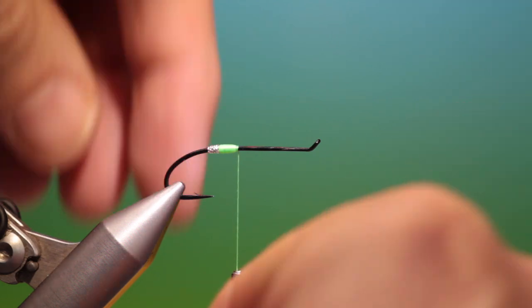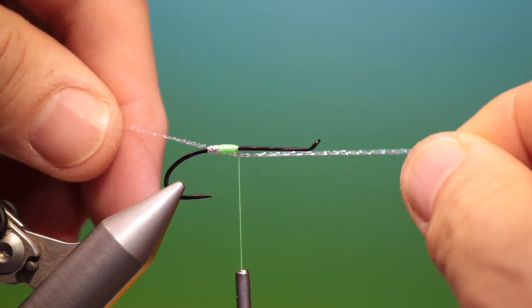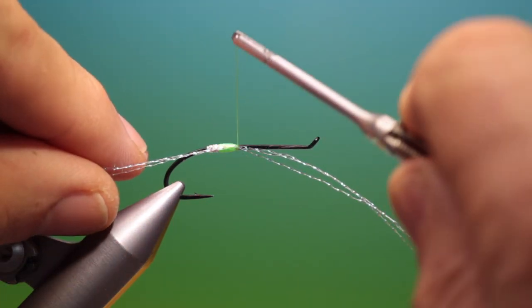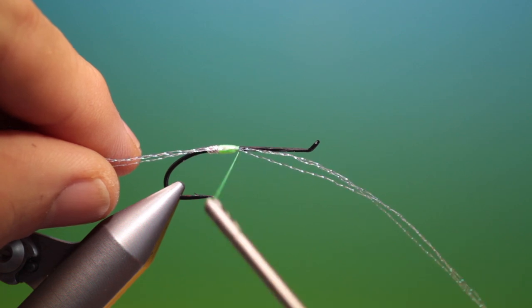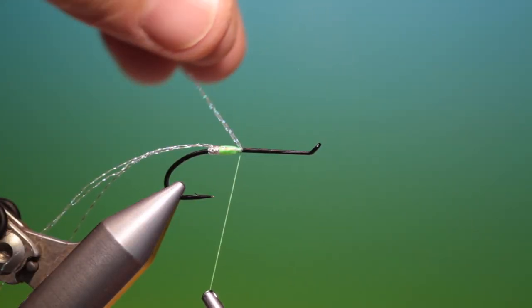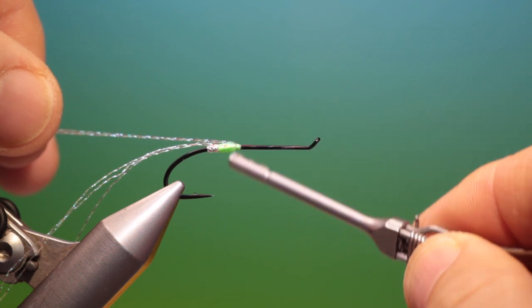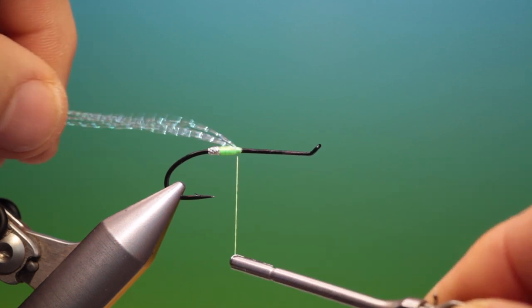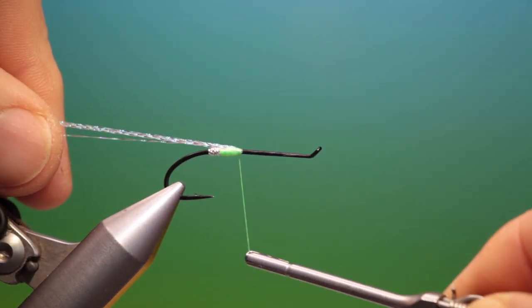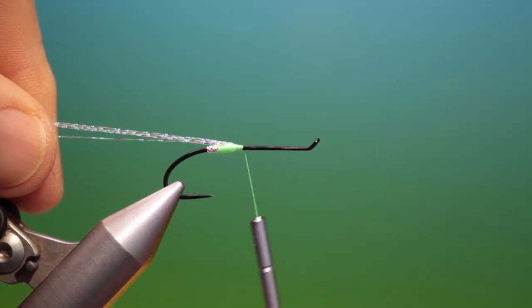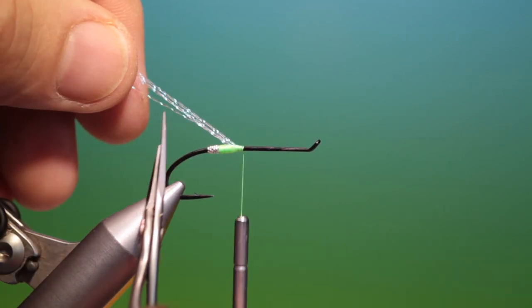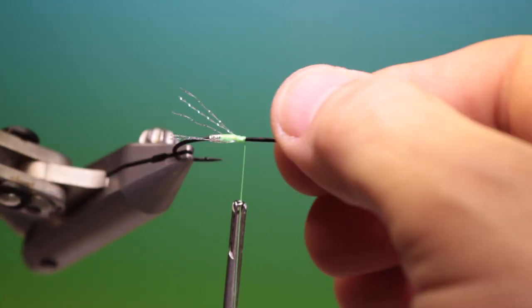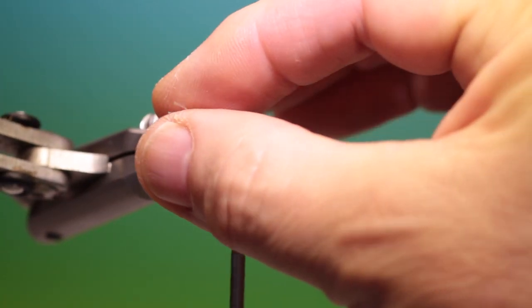I've got three strands of crystal flash which we'll just lift up around the back like that and we'll give that a couple of turns just to tack it in and we'll fold those three strands over. We'll bring them all up like that, lock that off, and then if you rest your scissors up on the bend of the hook that's all we need for the tail.